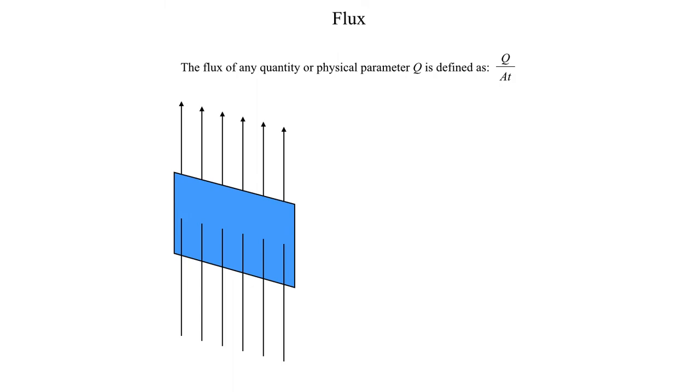Before I do that, I want to cover this idea of flux in a little bit more detail. Remember, the flux is the rate at which a physical parameter is flowing through some unit area. Here I'm just going to use this as sort of a baseline. We have six arrows representing some physical parameter that can be anything at all, anything that can flow. And then the area is given by this blue parallelogram here.